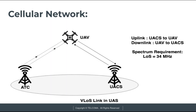Next is the VLOS link — visual line of sight link. As per ITU-R report M.2171, the following figure depicts the link and spectrum requirements for visual line of sight deployment. In VLOS deployment, the ATC and UACs directly communicate with the UAV because they have visual line of sight. The uplink process goes from UACs to UAV, and the downlink process goes from UAV to UACs. The spectrum requirement for LOS is 34 MHz. Here the drone communicates directly with both ATC and UACs.